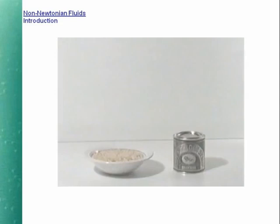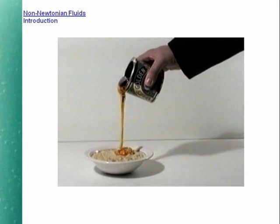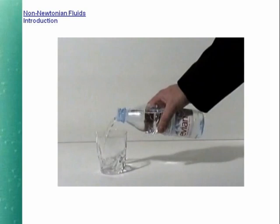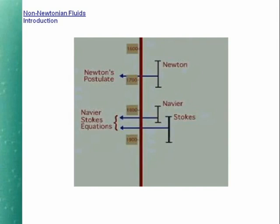Syrup and water are common liquids that obey Newton's postulate. For syrup, the viscosity is of the order of 100 pascal seconds, whereas the viscosity of water is about 1 millipascal second — that is 100,000 times less viscous. Although Newton introduced his ideas in 1687, it wasn't until the 19th century that Navier and Stokes independently developed a consistent three-dimensional theory for what is now called a Newtonian viscous fluid.